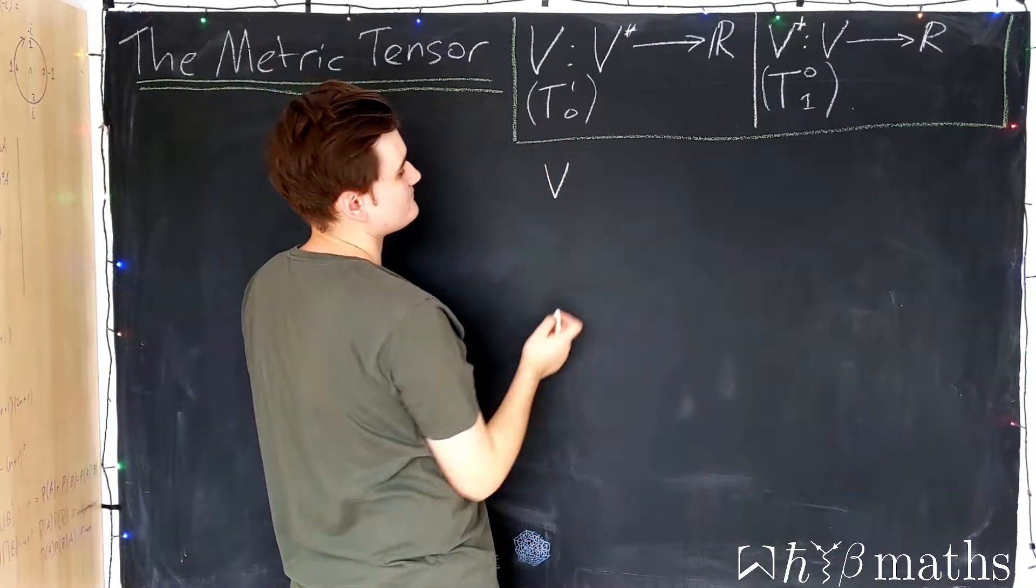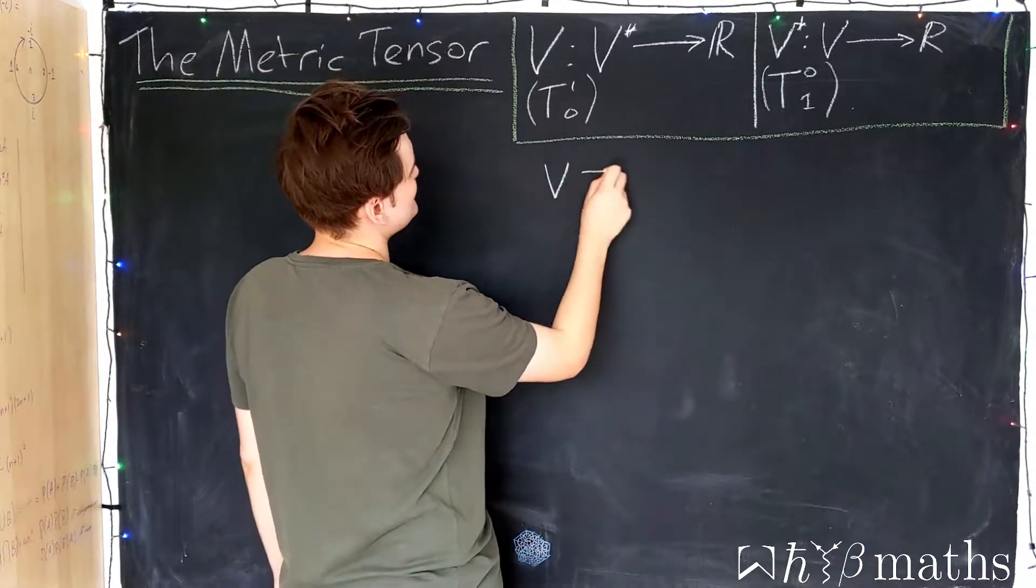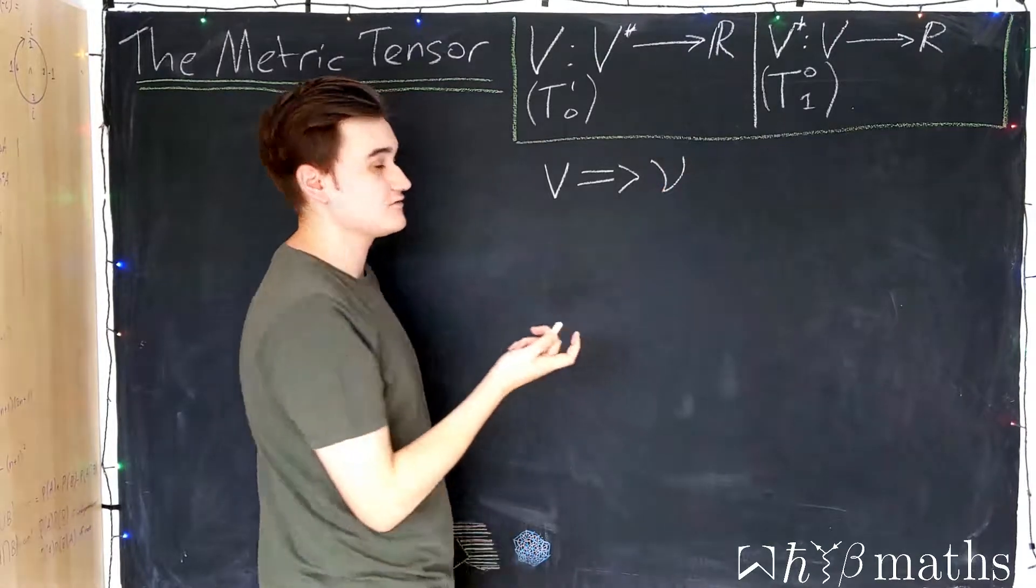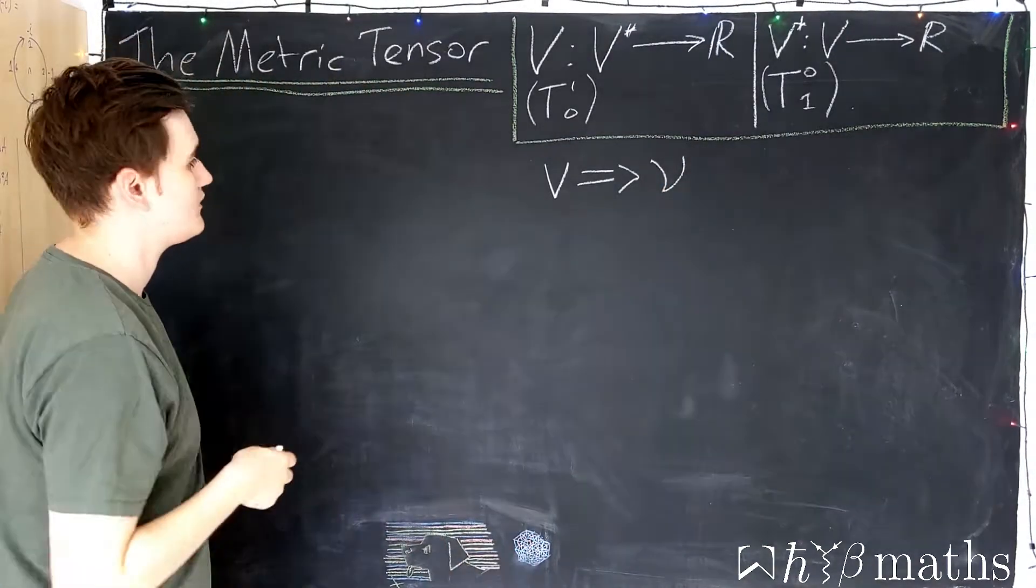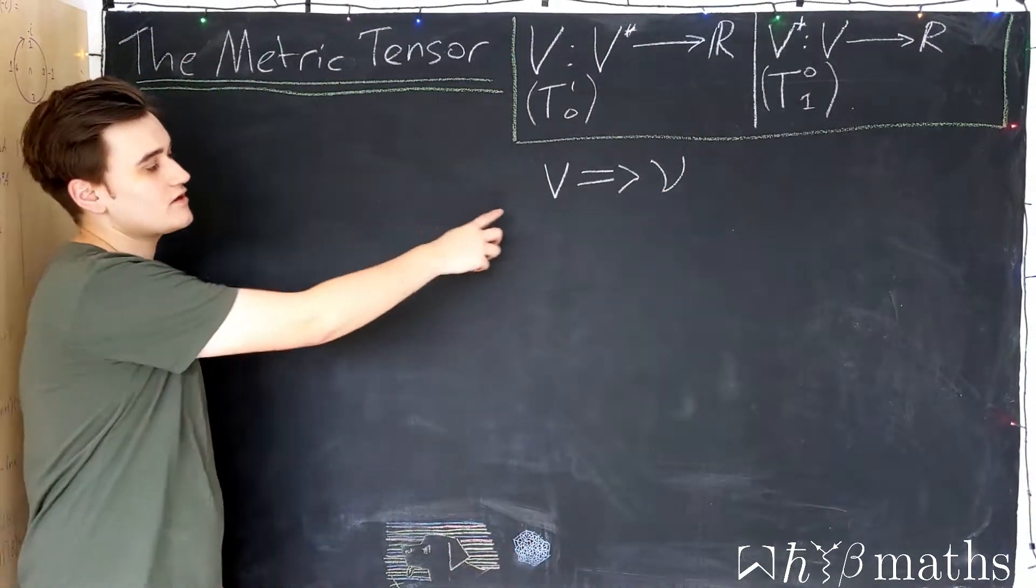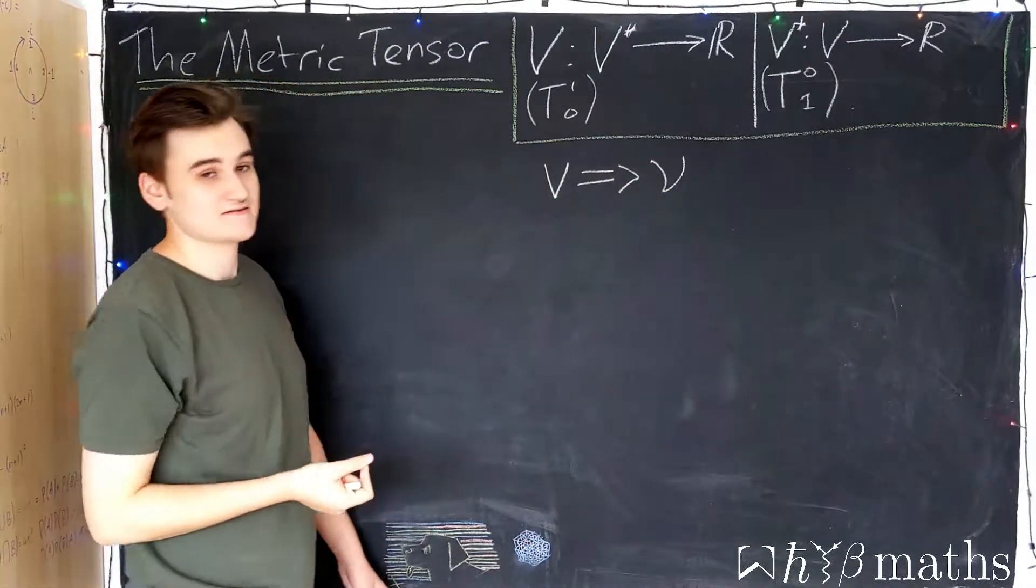If I give you a vector, there's no way you can tell me what its corresponding dual vector is going to be. So we'll see that the way to go between the vector space and the dual space is using an object which we call the metric tensor.